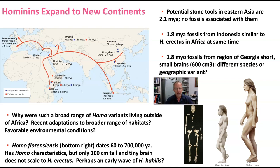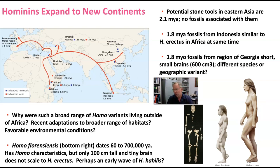There are 1.8 million year old fossils from the region of Georgia in Western Asia. They have very small brains, about 600 cubic centimeters, which is about on par with Homo habilis. So the question arises: are these a different species, or perhaps a geographic variant of Homo habilis? Homo habilis has only been found in Africa, but the similar brain size is why we might draw that connection.